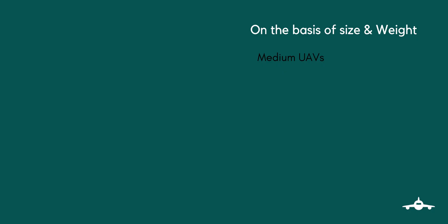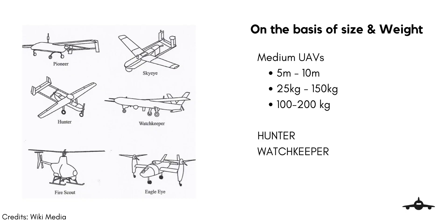Medium UAVs applies to UAVs that are too heavy to be carried by one person but are still smaller than a light aircraft. They usually have a wingspan of about 5 to 10 meters and weigh between 25 kg and 150 kg, and can carry payloads of 100 to 200 kg. Examples of medium fixed-wing UAVs are the Israeli-US Hunter and the UK Watchkeeper.